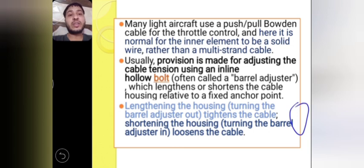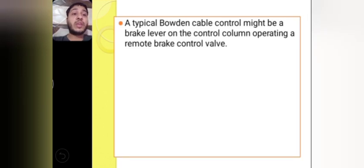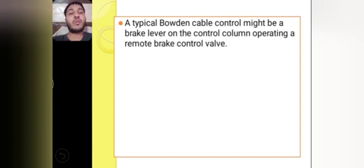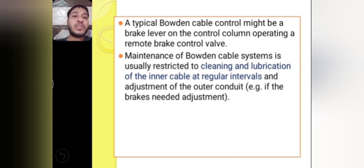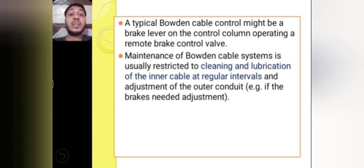The barrel adjuster increases or decreases the housing length to adjust cable tension. A typical Bowden cable control might be a brake lever on the control column operating a remote brake control valve — so it can also be used in brake systems to operate the brake control valve. Maintenance of the Bowden cable system is usually restricted to cleaning and lubrication of the inner cable at regular intervals and adjustment of the outer conduit — for example, if the brake needs adjustment. At regular intervals, you must perform lubrication and cleaning of the inner cable.